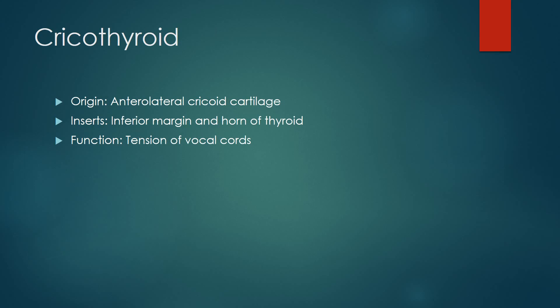The cricothyroid muscle originates from the anterolateral cricoid cartilage and inserts on the inferior margin and horns of the thyroid cartilage. It functions as a tensor of the vocal cords.